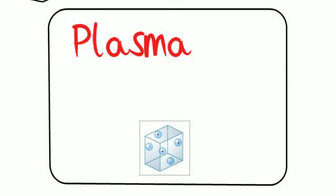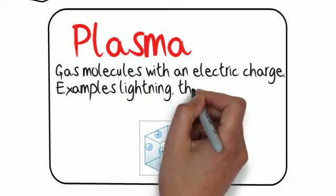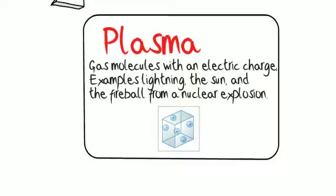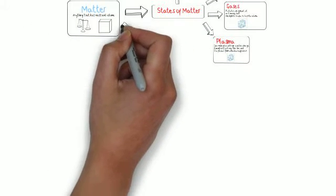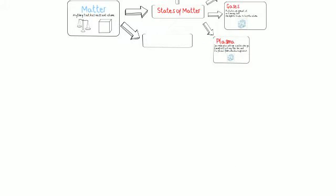And then finally, we have plasma. And what plasma are is they're gas molecules that have an electrical charge. Examples of this are lightning. The sun is plasma. Nuclear explosions are plasma. They're just gas particles, but they have electrical charges to them.